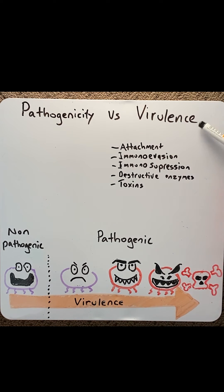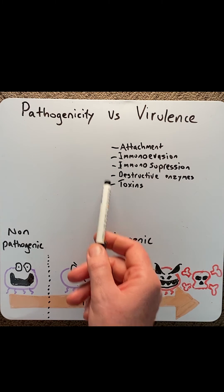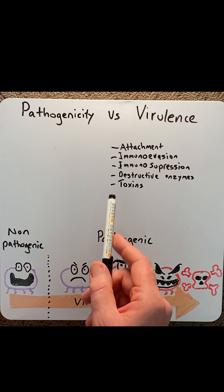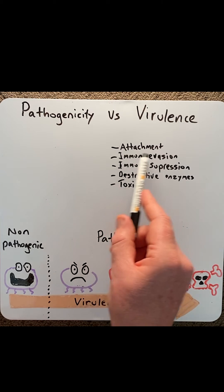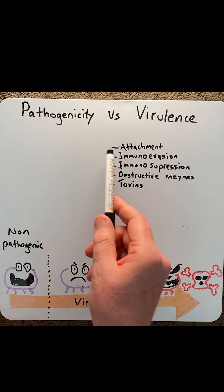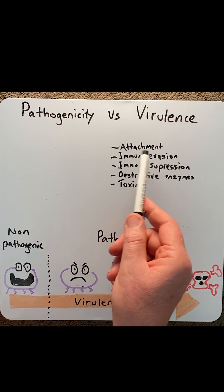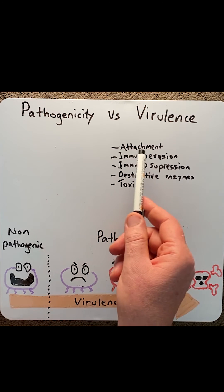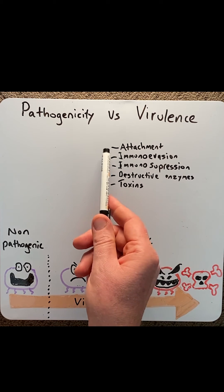What increases the virulence of some microorganisms? Here are some virulence factors: such as attachment or movement in the body. These allow the bacteria or microorganism to attach easily and move through the body.